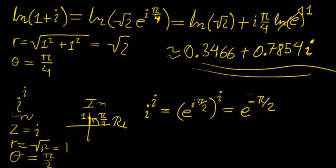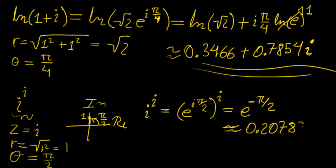If you notice something about this result, it's a real number — which is a really interesting thing. If you raise the imaginary unit to itself, it gives you a real number, which is a very unexpected result. If we approximate this, it gives approximately 0.20788. So that would be the value of i^i, which is kind of crazy. Here it is — that's what it is.